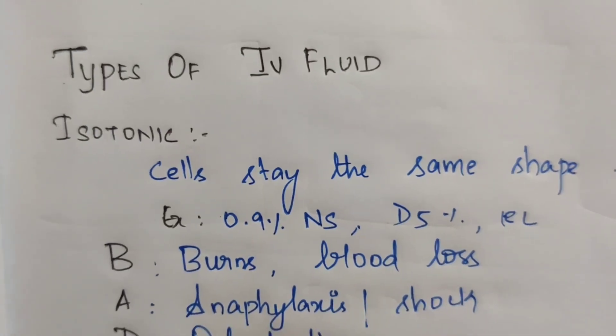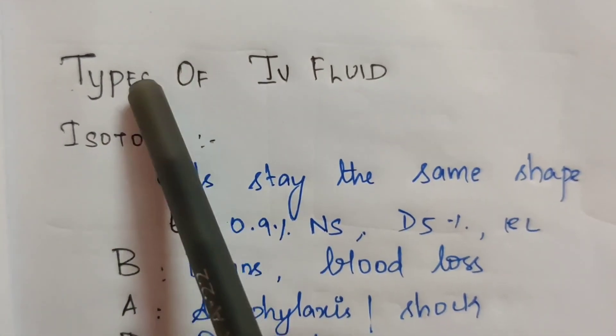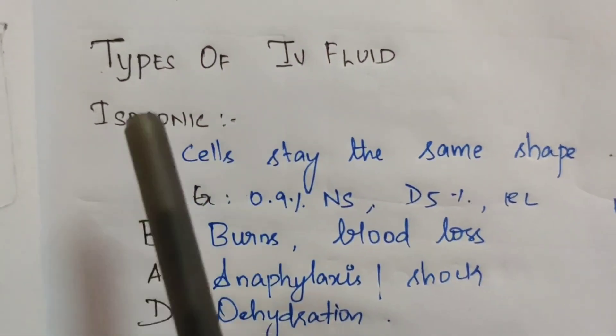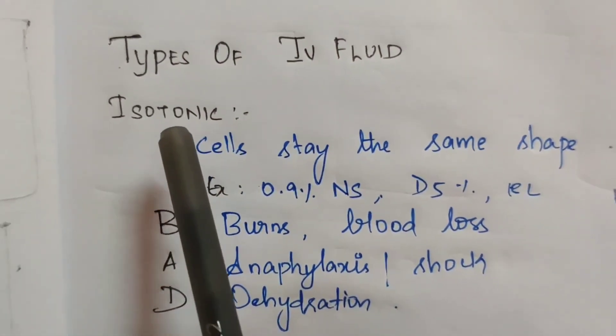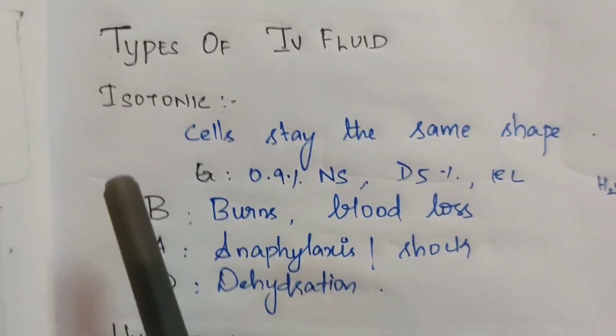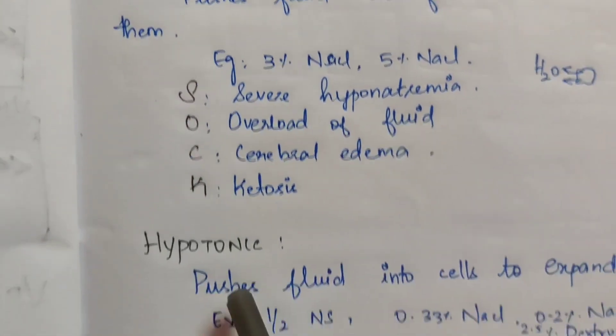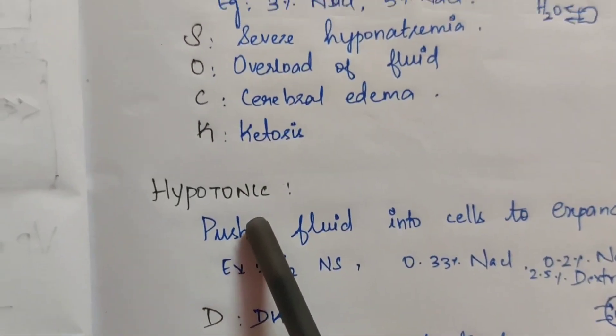Hi, I am going to talk about types of IV fluids. The three types are: 1. Isotonic, 2. Hypotonic, 3. Hypertonic.